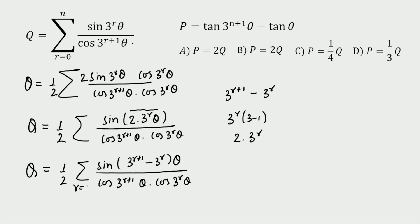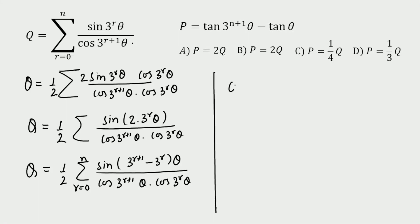Now opening q: q = ½ · Σ [sin(A − B) expanded]. Expanding sin(3^(r+1)·θ − 3^r·θ) using sin(A−B) = sinA·cosB − cosA·sinB, the cos(3^r·θ) terms cancel for the first part giving tan(3^(r+1)·θ), and cos(3^(r+1)·θ) terms cancel for the second part giving tan(3^r·θ). So we get q = ½ · Σ [tan(3^(r+1)·θ) − tan(3^r·θ)].